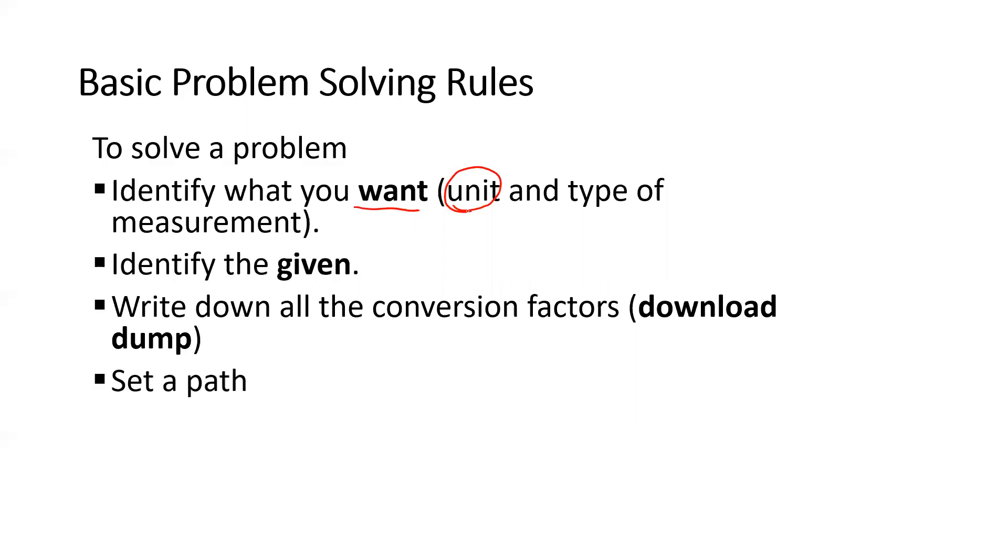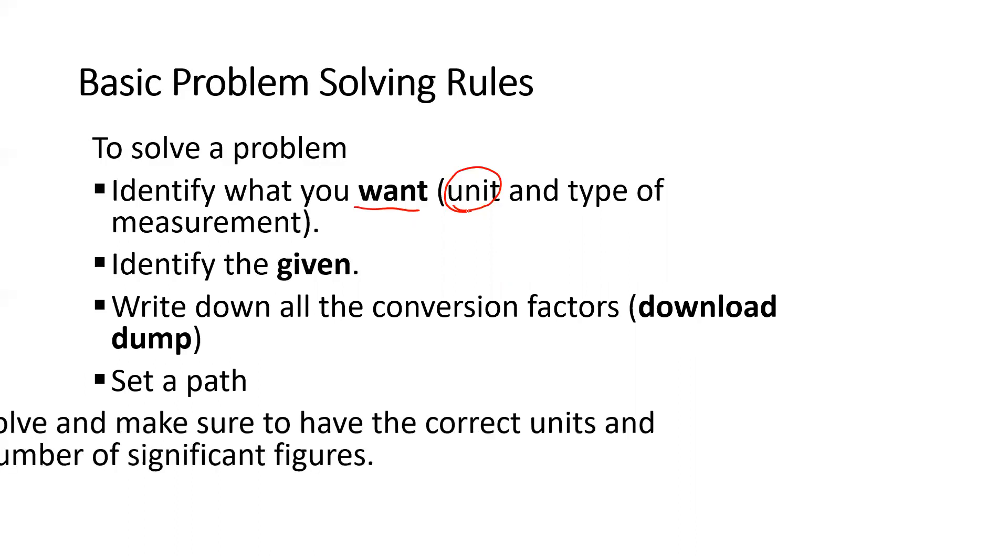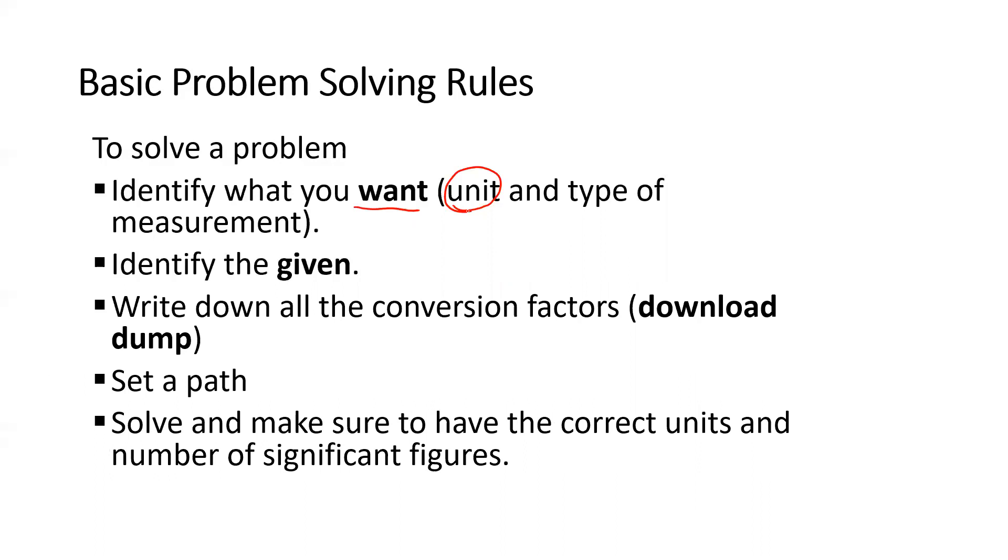Then you're going to take those conversion factors, figure out how you're going to align the denominators to cancel, and set up a path. I call this railroad tracks - you're setting up a path. And then you're going to use your calculator to solve the math. At the very end you know that in chemistry no measurement is complete without the correct number of sig figs and units. So typically in chemistry, any measurement is going to have three things: the numerical value, the sig figs, and the units. That's what your final answer has to have.